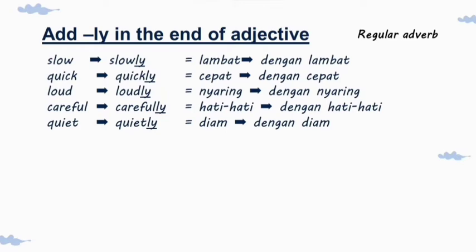Jadi, 'slow' itu adjective yang artinya lambat. Ketika ditambahkan -ly berubah menjadi 'slowly', dengan lambat. Maka 'slowly' adalah adverb of manner. 'Quick' adalah adjective, ditambah -ly menjadi 'quickly'. Demikian juga 'lovely', 'carefully', 'quietly'. Jadi kalau adjective ditambah akhiran -ly maka dia berubah menjadi adverb of manner.